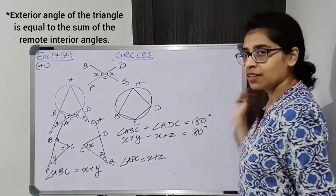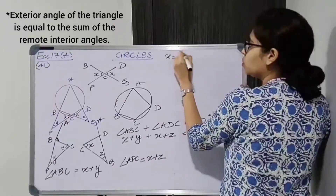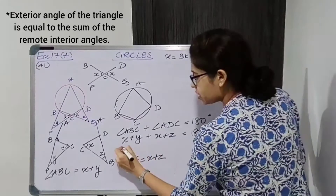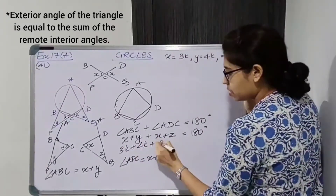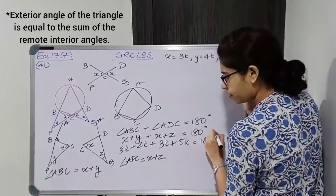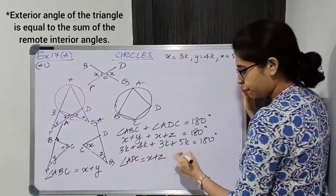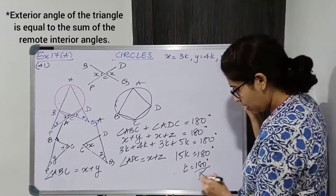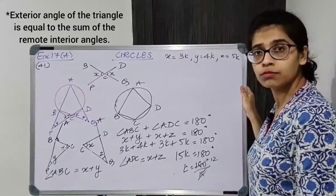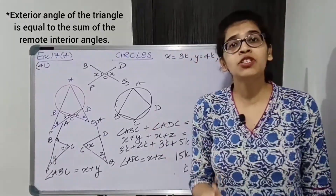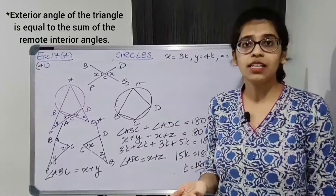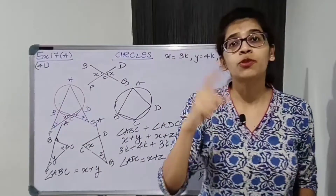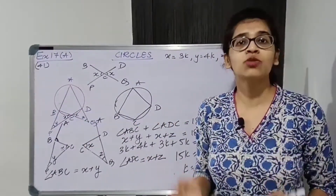Substituting: (x + y) + (x + z) = 180°. Since x = 3k, y = 4k, z = 5k, we get (3k + 4k) + (3k + 5k) = 15k = 180°. Therefore k = 180/15 = 12. It's very straightforward — exterior angle property in both triangles, and those exterior angles are opposite angles of the cyclic quadrilateral.